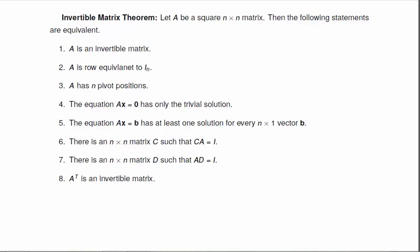The first one, A is an invertible matrix. Two, A is row equivalent to the identity. So if it's invertible, we found the inverse by row reducing to the identity. So it has to be row equivalent.